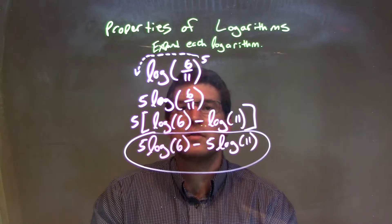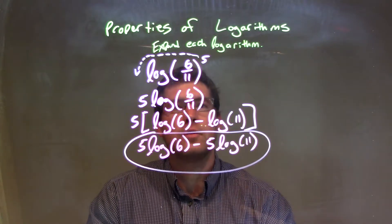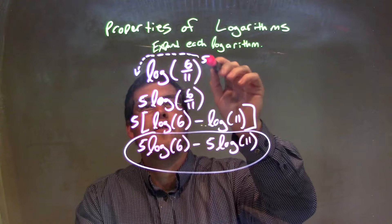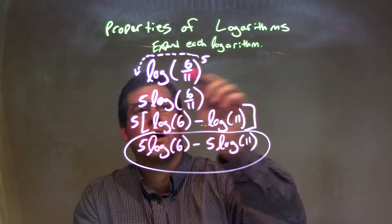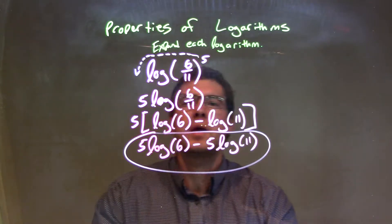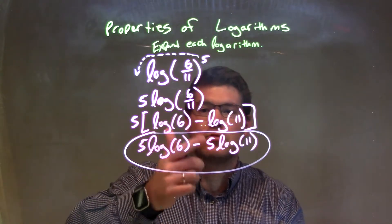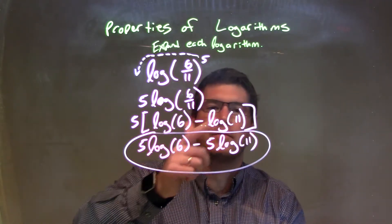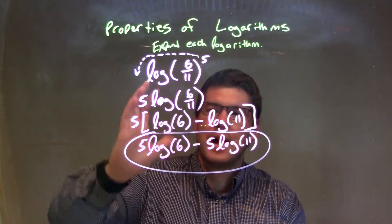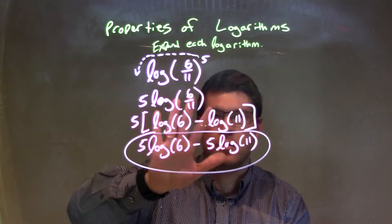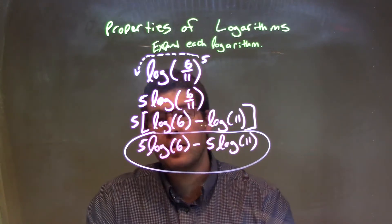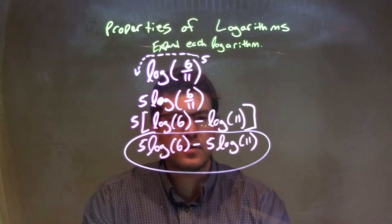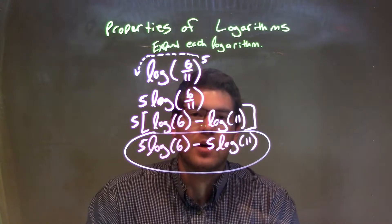So let's recap. We're given log of 6 divided by 11, all to the 5th power. Well, that 5th power can come out front by our log rules. 5 can just come out right in front here. And then, 6 divided by 11 is subtraction when we expand it. So log of 6 minus log of 11. But the 5 on the outside is going to be multiplied to everything that encompasses there. And then we distribute the 5 across two parts, giving us our final answer of 5 log 6 minus 5 log 11.